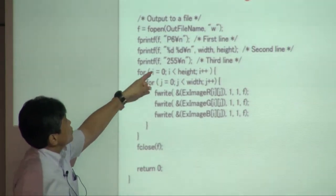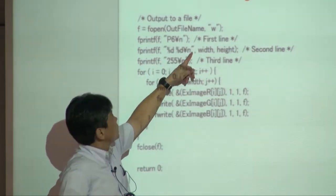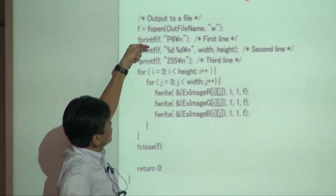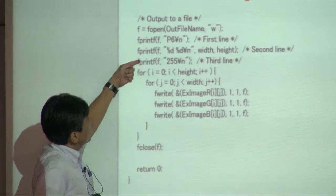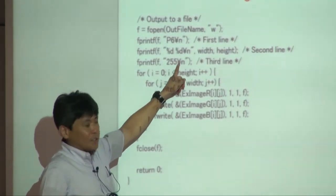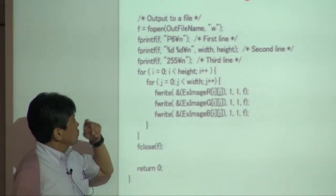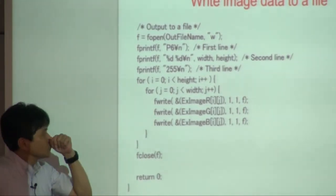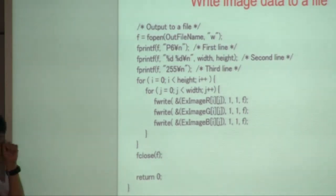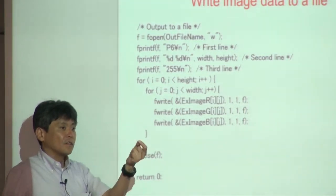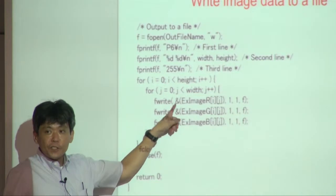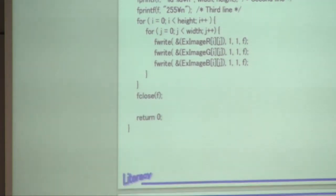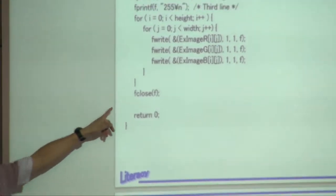The writing file is binary, so the first line must be P6 followed by a carriage return. The second line is width and height. There are no comment lines in this case. The third line is the maximum size of each data value, usually 255. From the fourth line, the program writes the actual binary data using fwrite. Finally, call fclose.